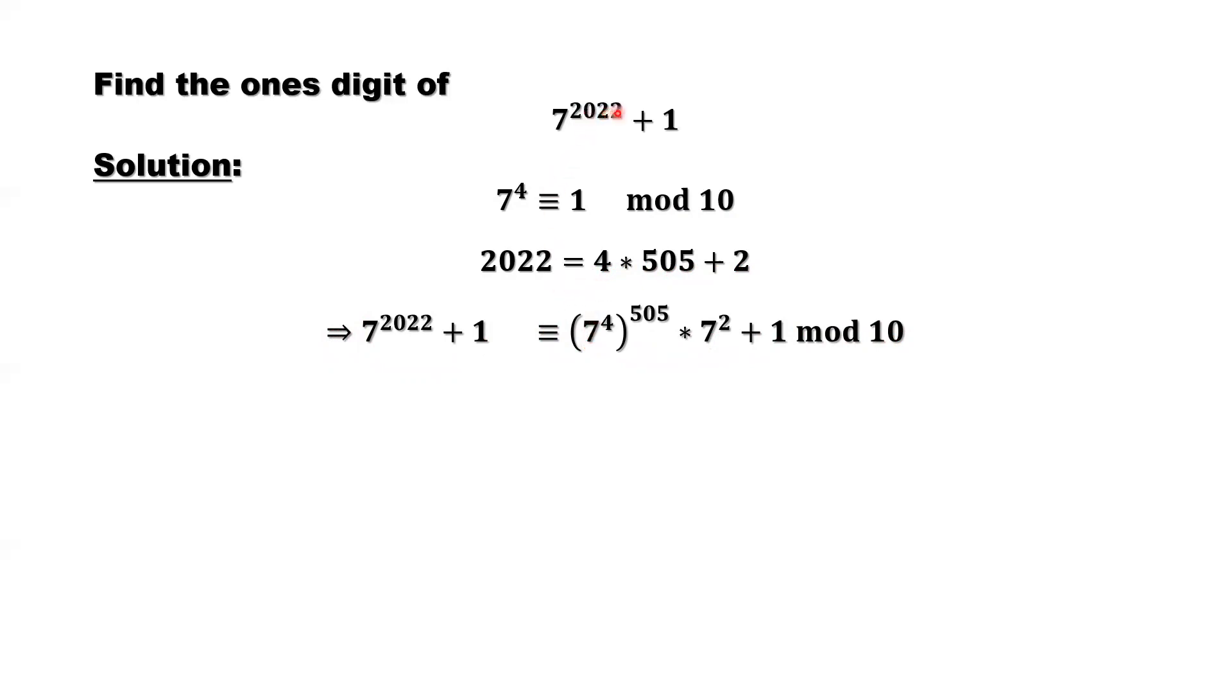So here, replace 2022 by 4 times 505, then plus 2 here. You have two more items outside. So here, 7 to the power of 4, what is the ones digit? Ones digit, we find that's 1.